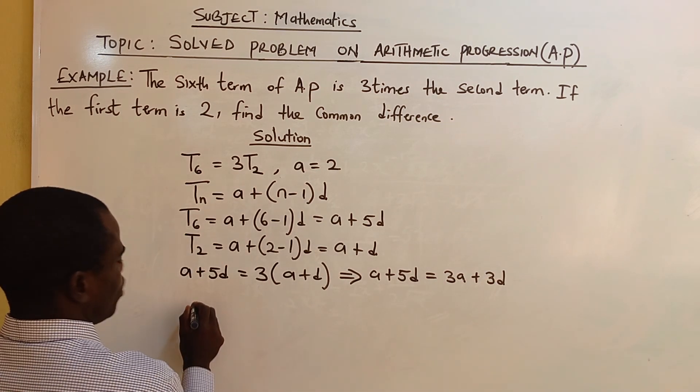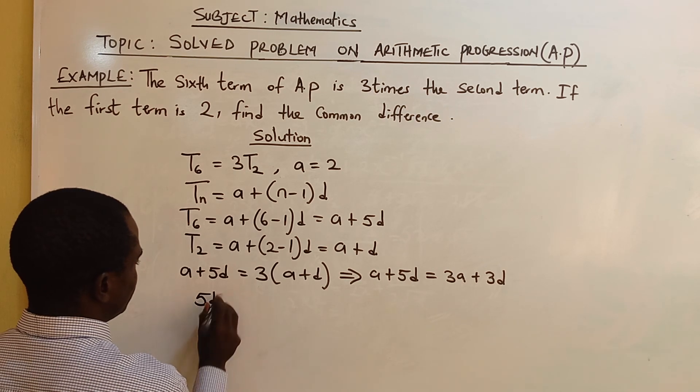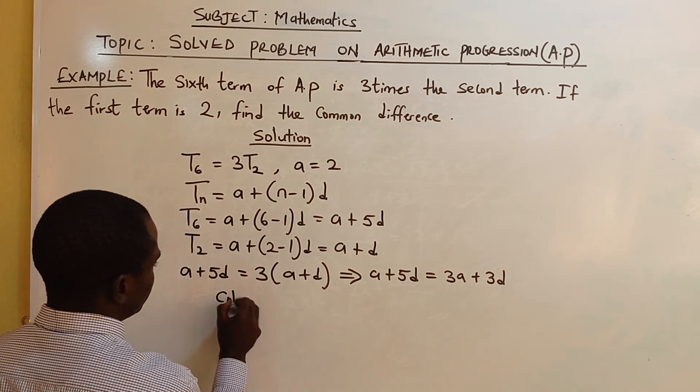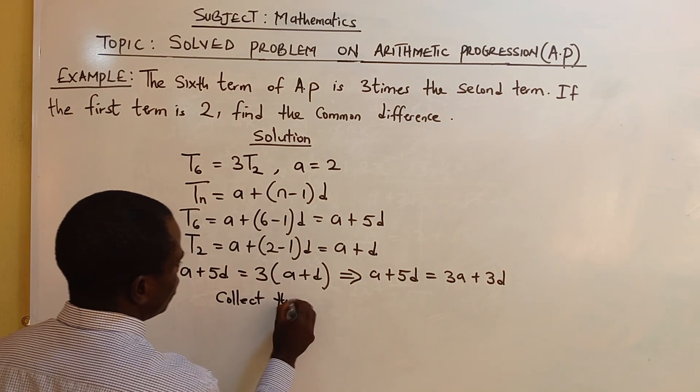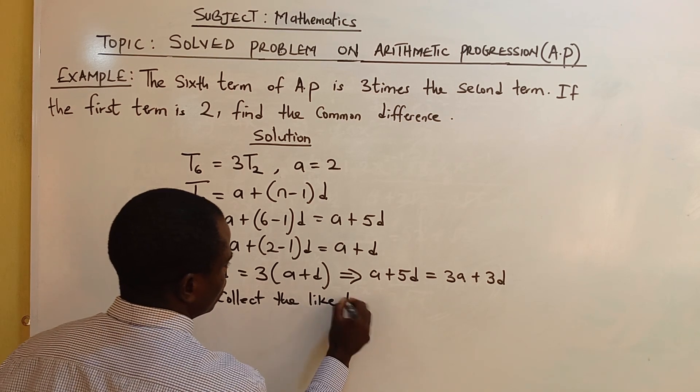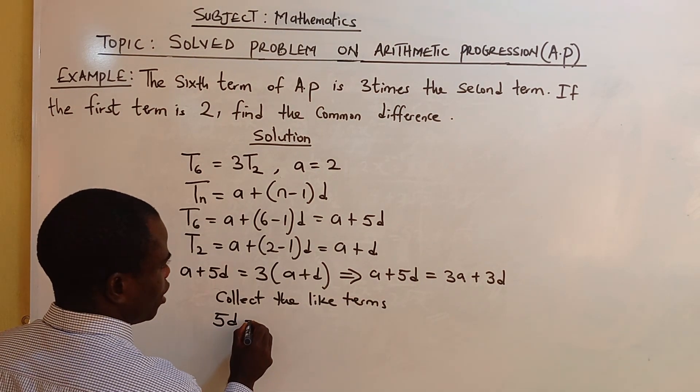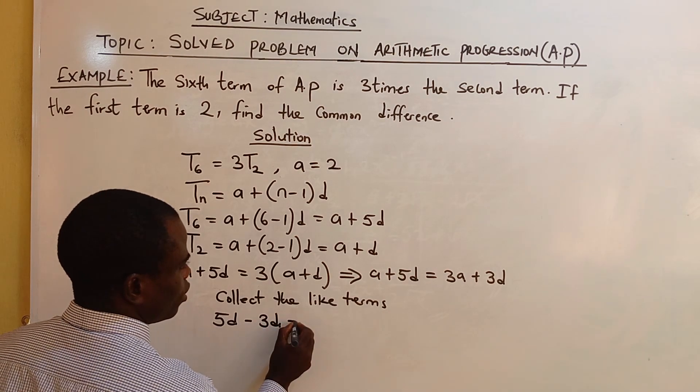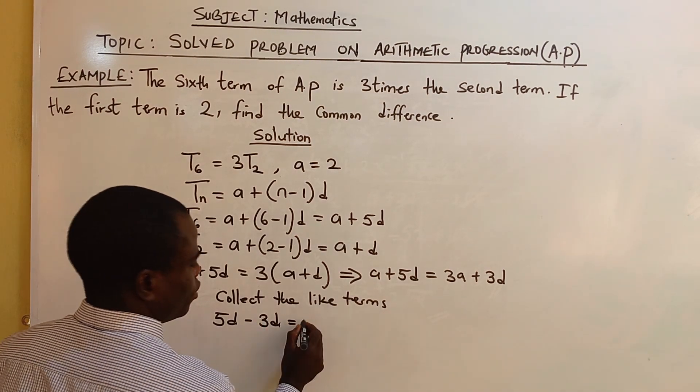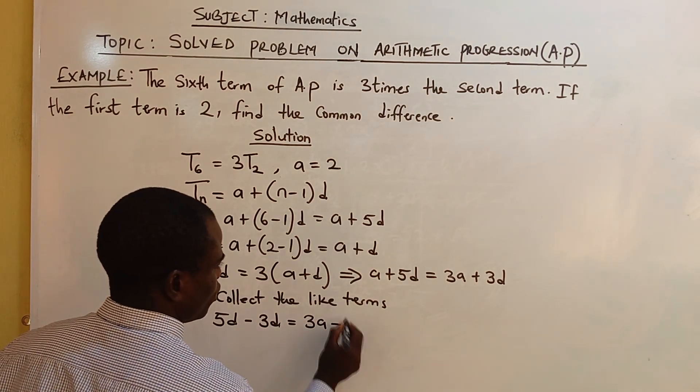Let's collect the like terms. We have 5D, we'll collect the like terms. We have 5D minus 3D equals 3A minus A.